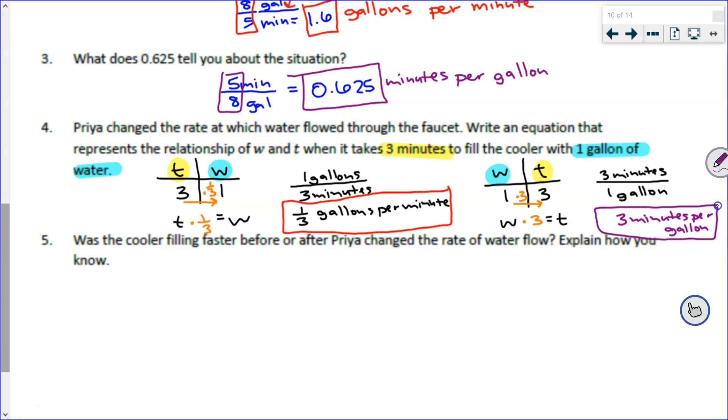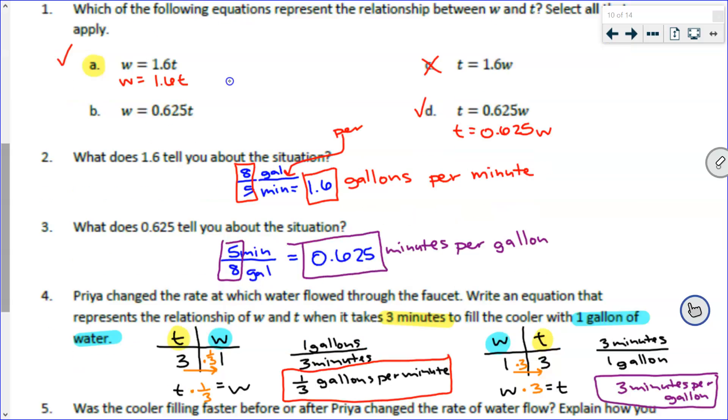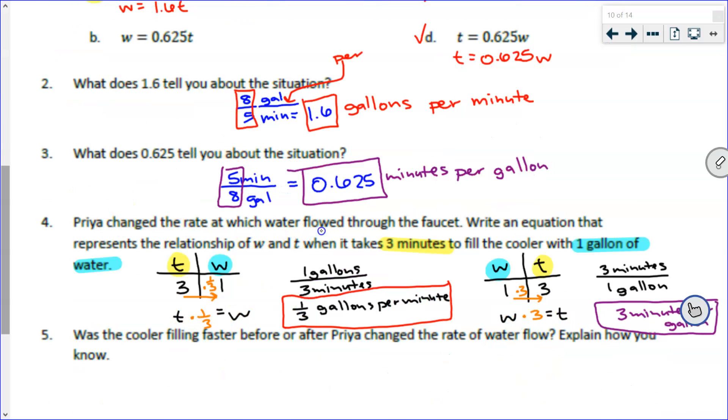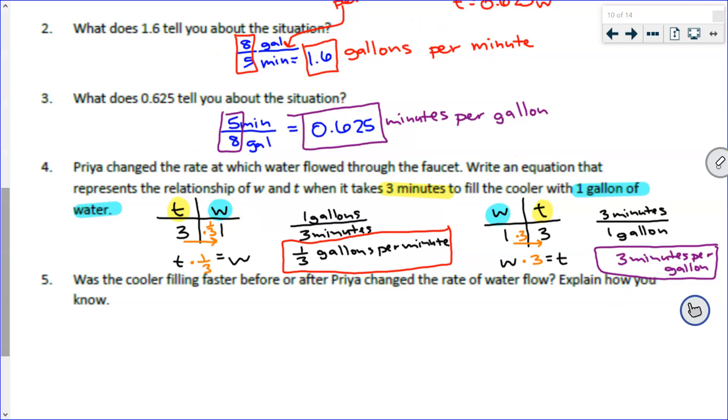Here is your official real challenge question. I've been leading up to it this whole time. Remember what happened here. Priya was filling up a cooler. And then here, she changed the rate at which the water flowed through the faucet. I'm sure you guys have done that before. You start and you realize, man, this is going really slow. I'm going to turn it up even faster. Or you realize, uh-oh, it's getting pretty close to full. I better slow it down so I don't overflow it. Okay? What did Priya do? Did she slow it down? Or did she speed it up? Talk to your groups. How can we use all of this information here to answer that question?